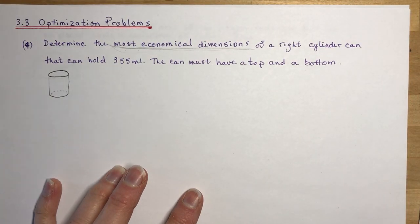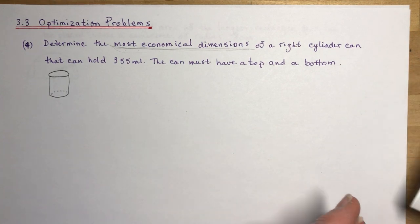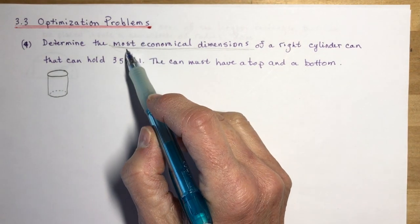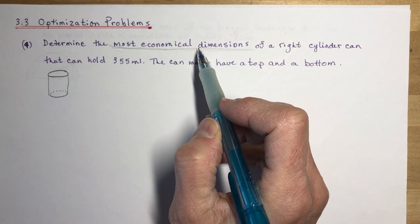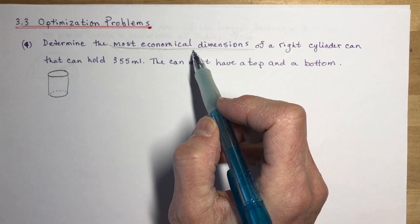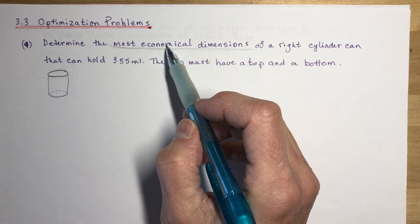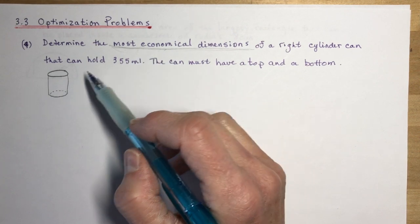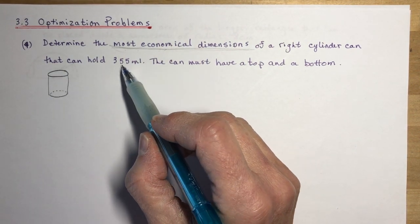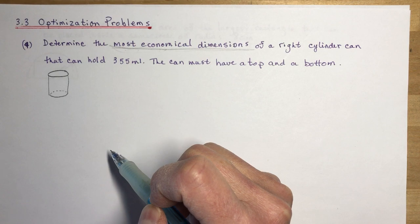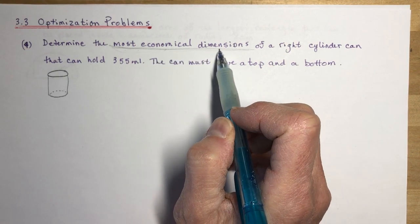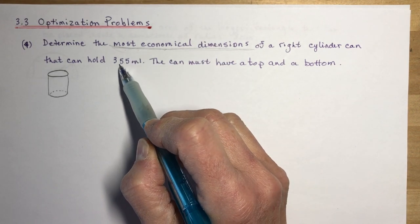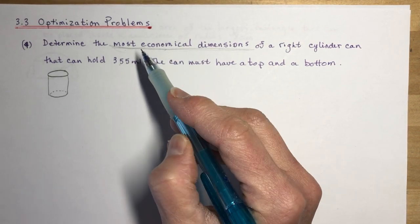Let's start with the economical dimensions of a right cylinder can. When talking about the most economical dimensions, imagine you work for a pop company like Coca-Cola and they want to use the least amount of aluminum. What is the least aluminum needed to make a can with 355 mils? Most economical dimensions means minimizing the surface area. We're given the volume and we need to find the surface area.